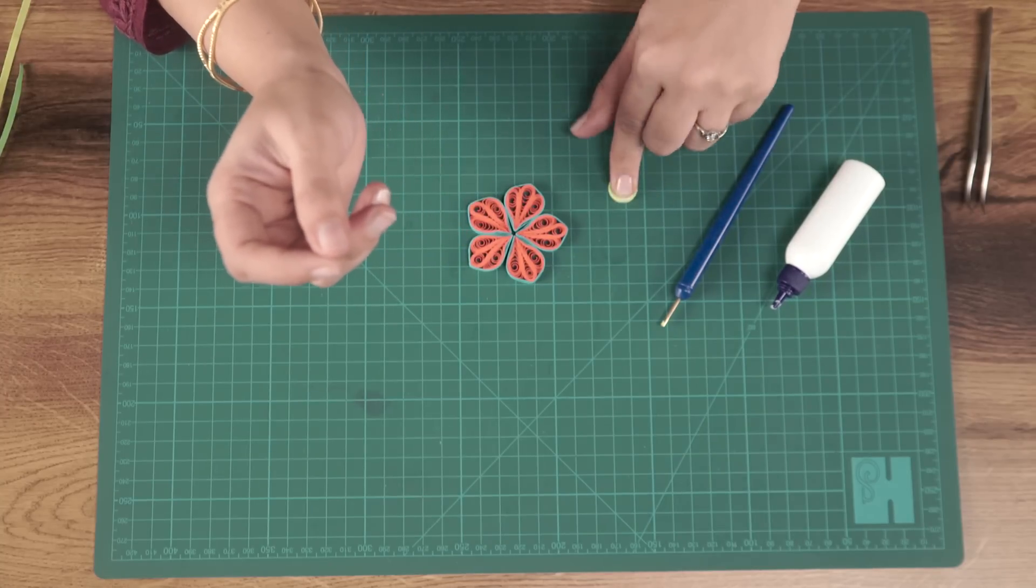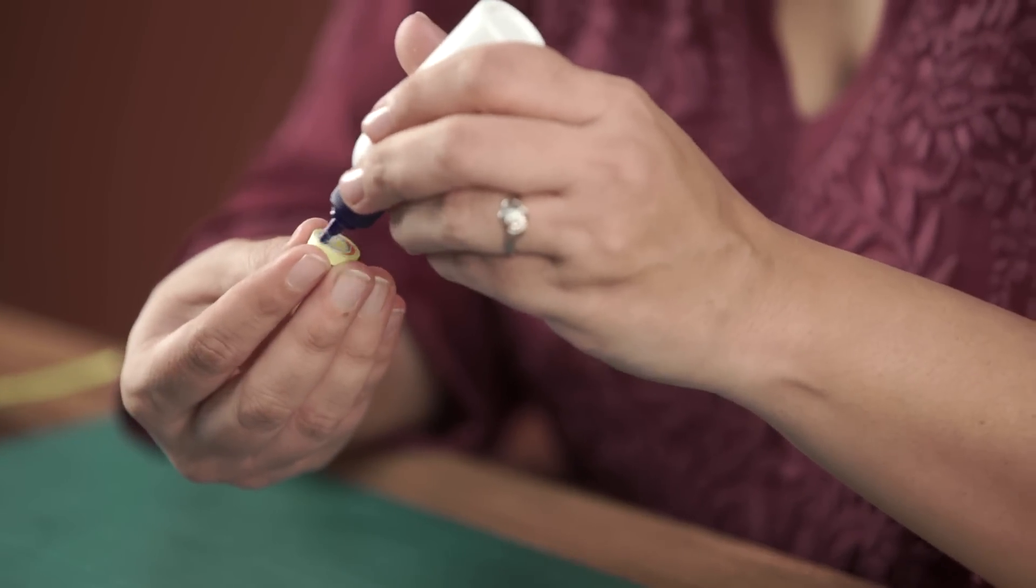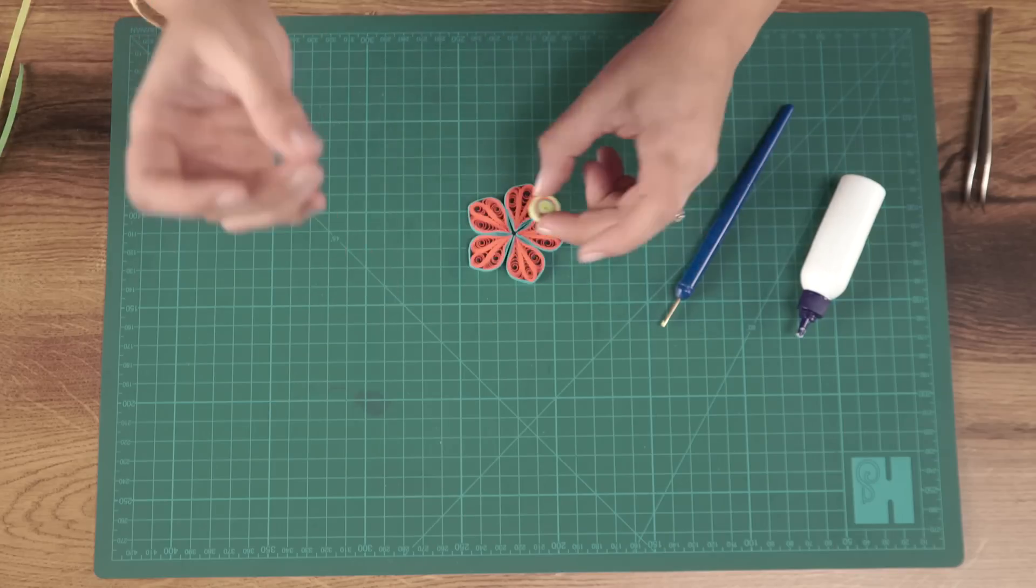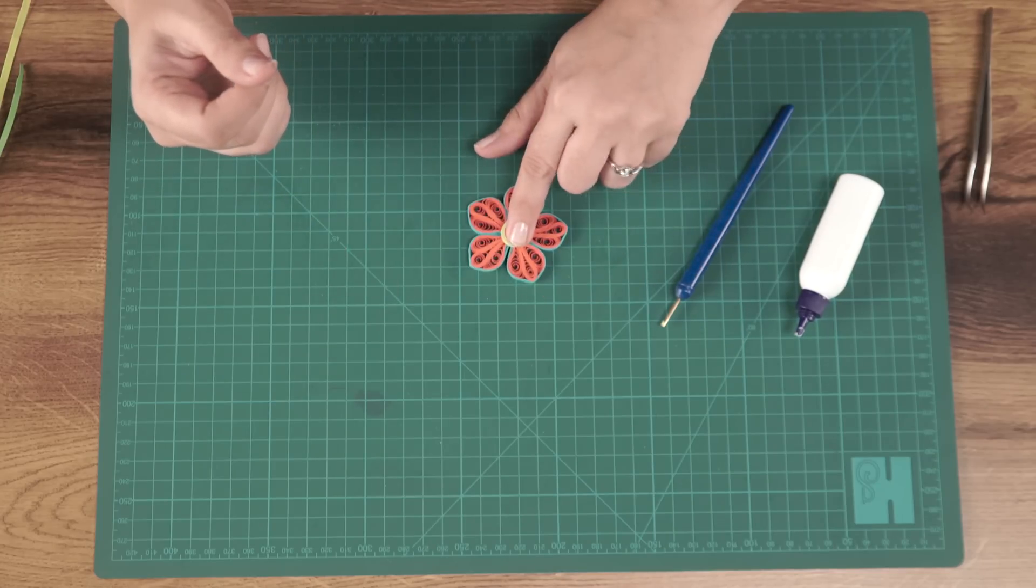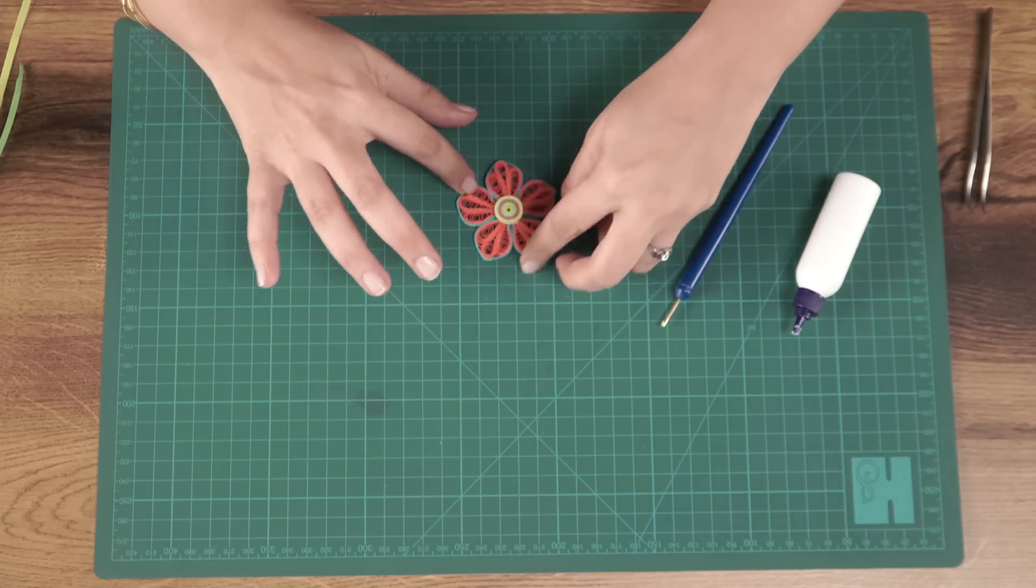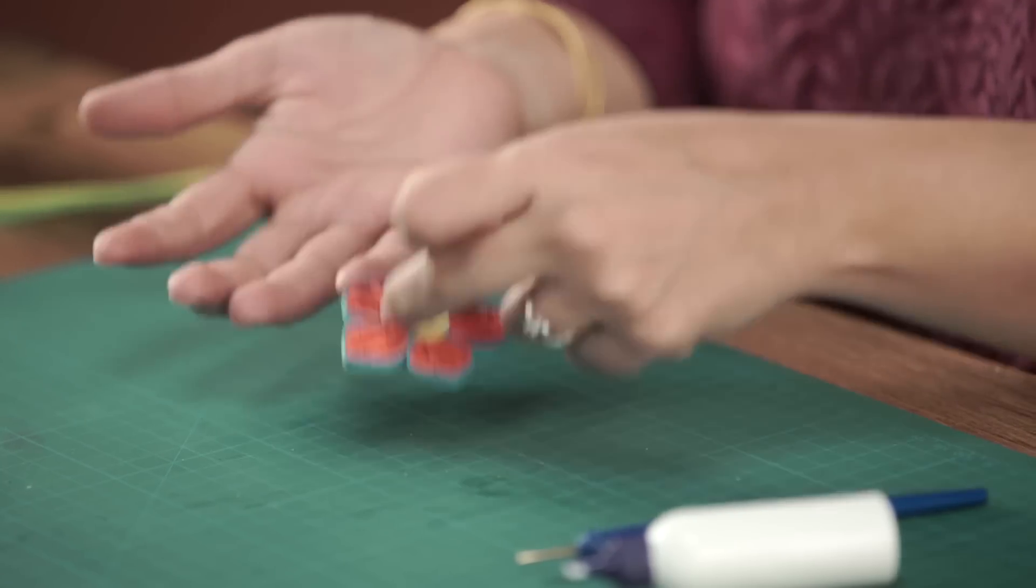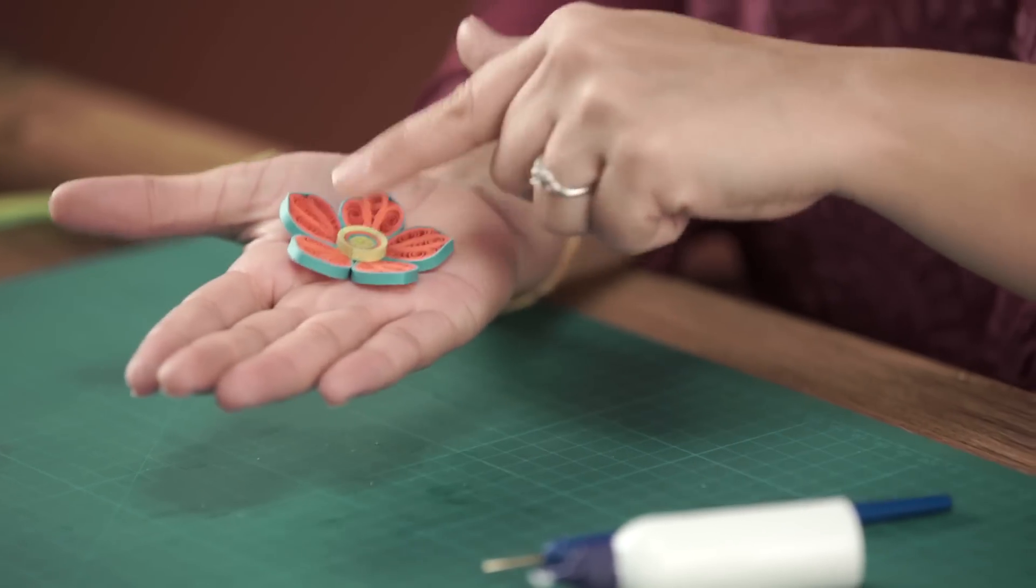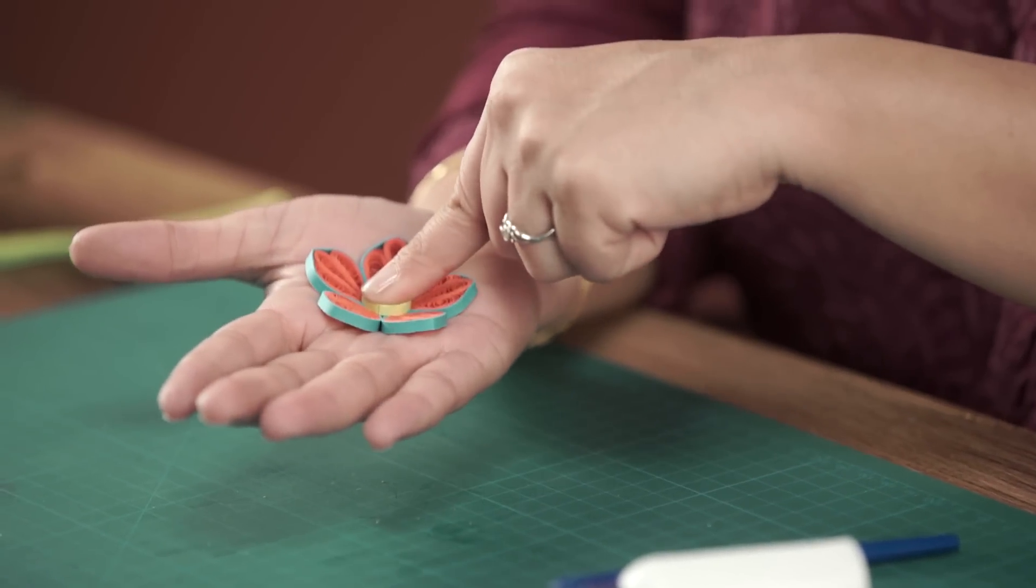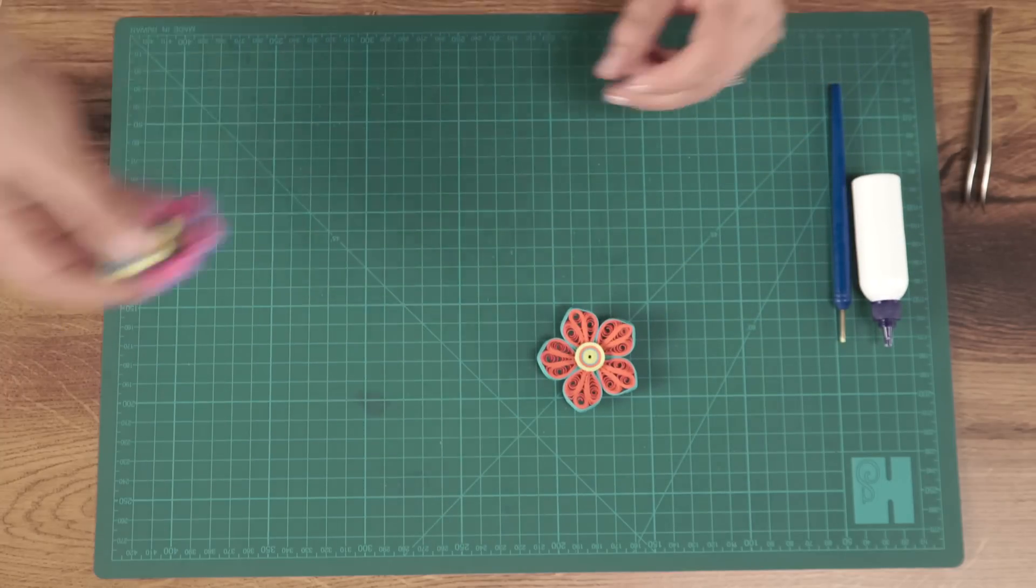Press it down. Apply some glue and put it over your petals. Press it properly, put it in the palm of your hand, press it down, give it a 3D effect. Leave it to dry. In the same way, I've made another variation, just a different color.